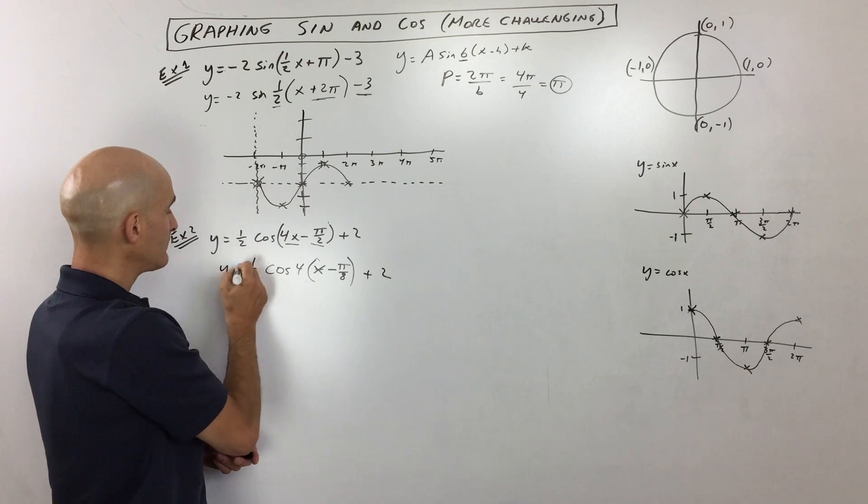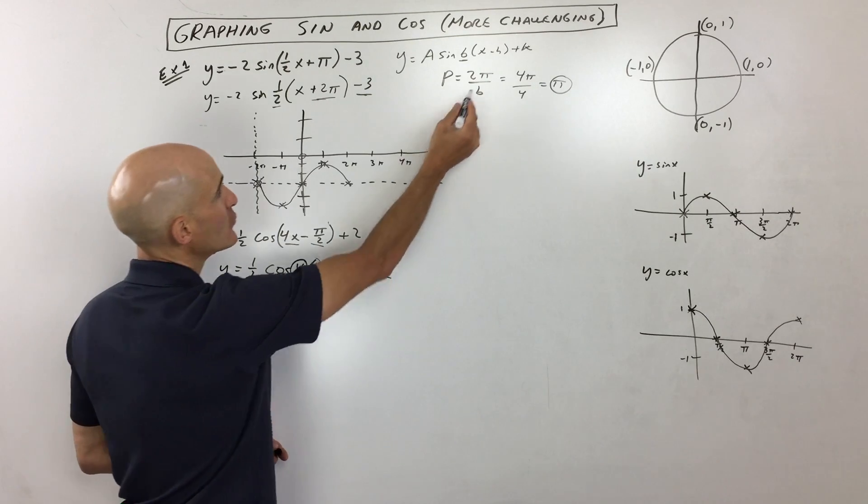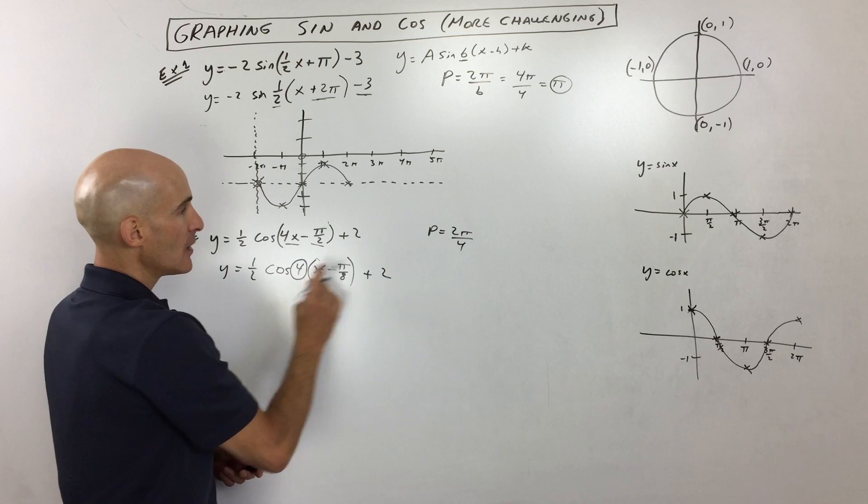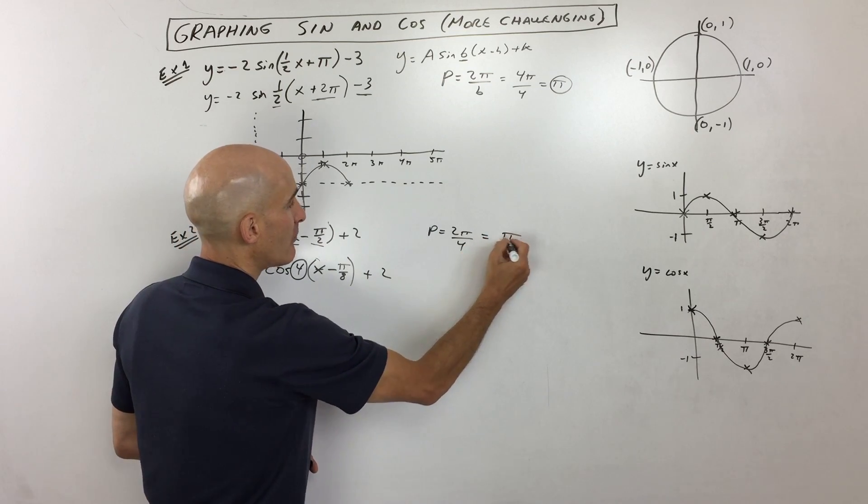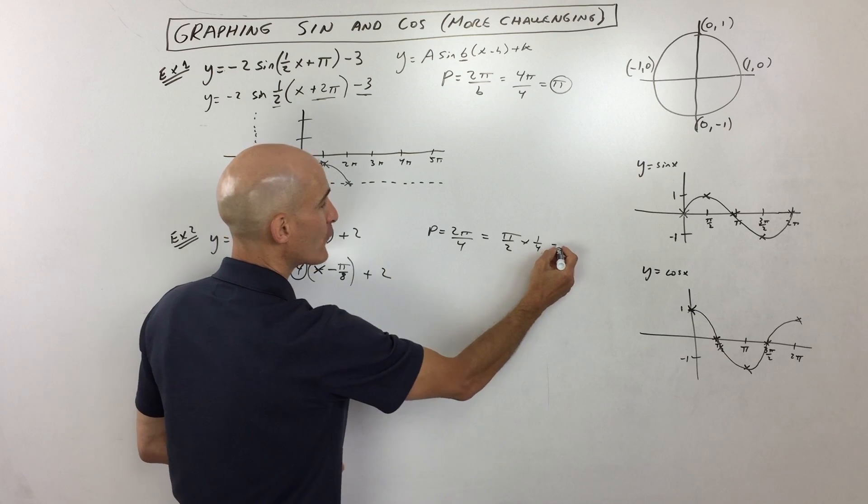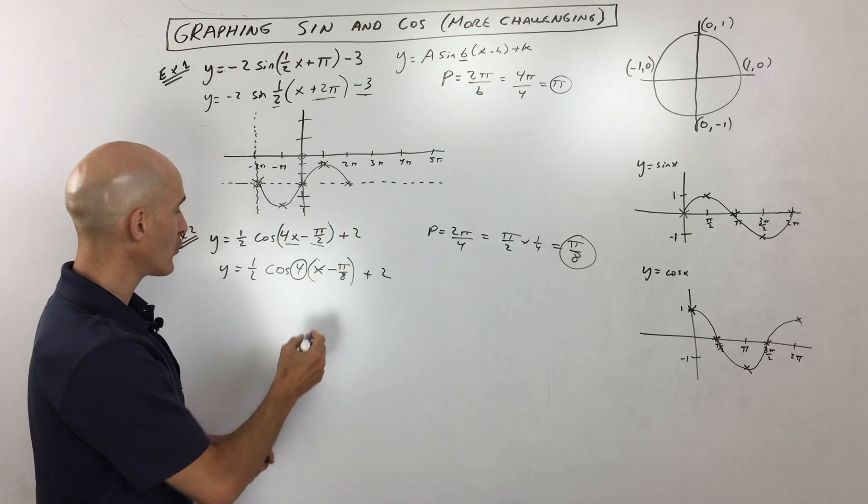Okay, so now let's take a look at our graph. We know that the b value is four. If we use our formula, period equals two pi divided by b, we're getting a period of pi over two. Now again, you can multiply that by one fourth or divide it by four. But what we're going to use for our scale is pi over eight. So our scale like how we did over there.